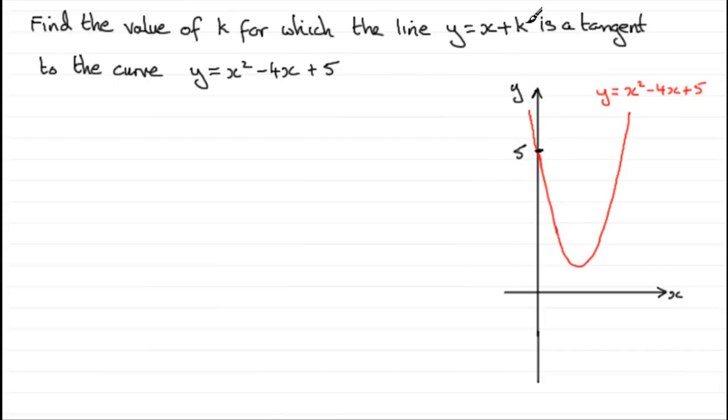Now we've got our line y equals x plus k, but we don't know what this constant k is. Any line of the form y equals x plus a constant is going to have a gradient of 1, positive gradient 1, so it's going to be a line sloping up something like this. Let's draw a general line: y equals x plus k.